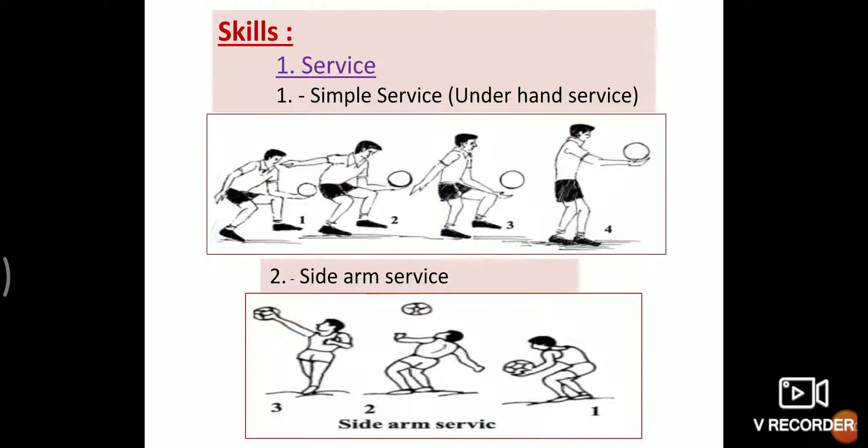Second, side arm service. Right hand player puts left foot forward. Left shoulder should be in the direction of the net. In this position, he tosses the ball up to his head level, and as the ball comes down, he extends right hand sideward and hits the ball to send it over the net to the other side.